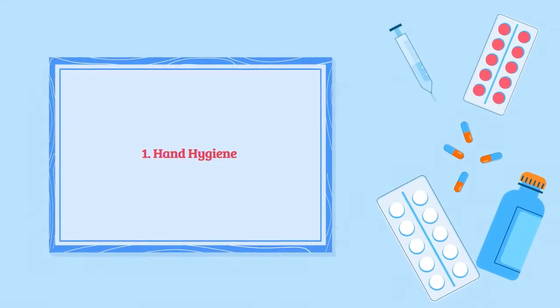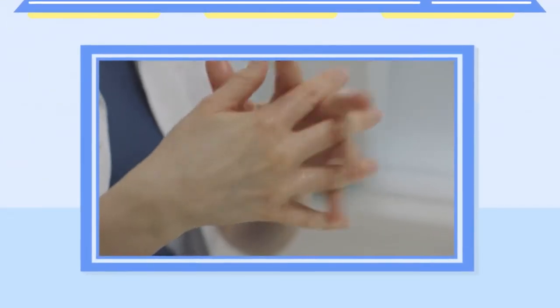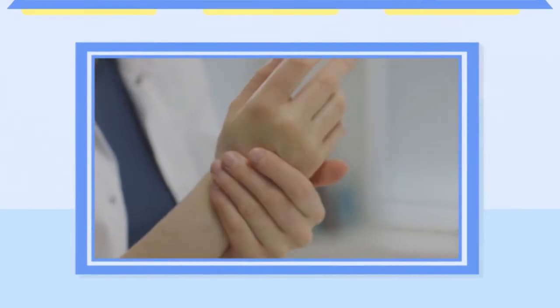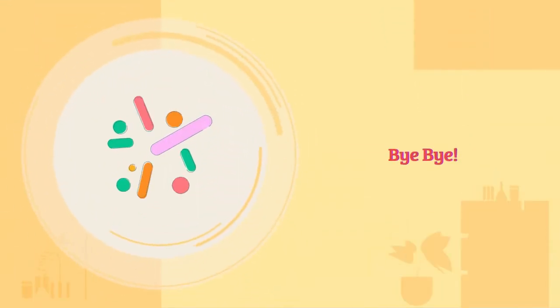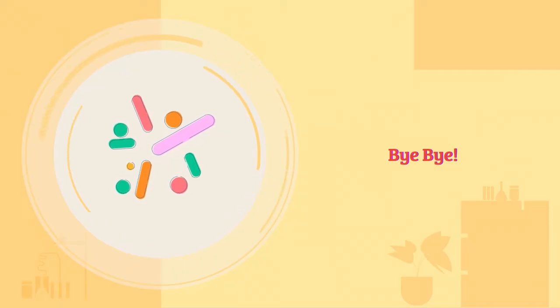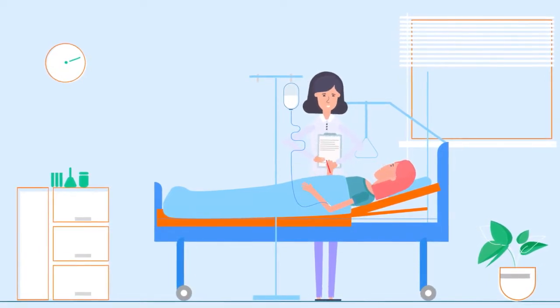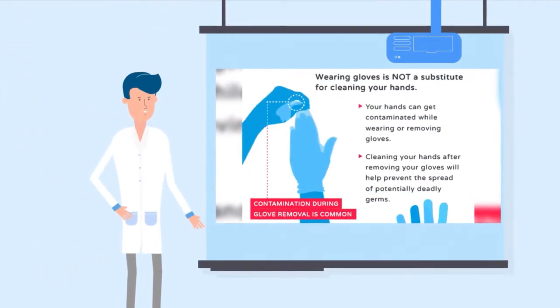Hand hygiene. One of the most effective ways to prevent CLABSIs is through proper hand hygiene. Healthcare providers should wash their hands thoroughly with soap and water or use an alcohol-based hand sanitizer before and after touching a central line. This ensures that any potential contaminants are removed. Gloves are not a substitute for hand hygiene — they are an additional layer of protection.